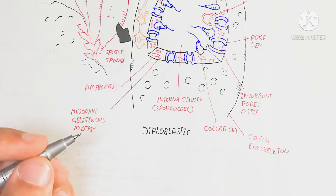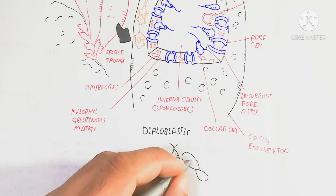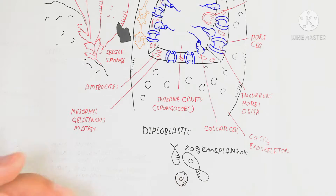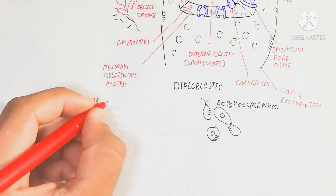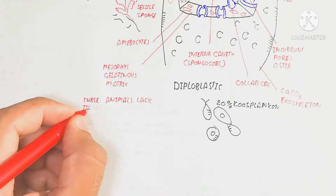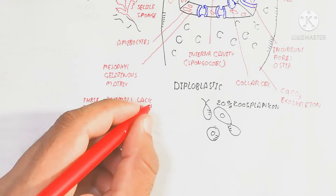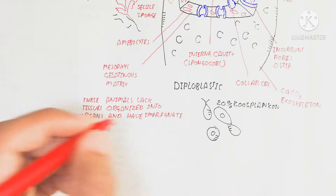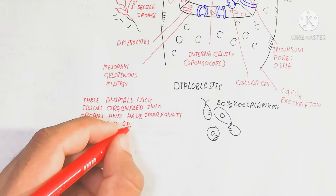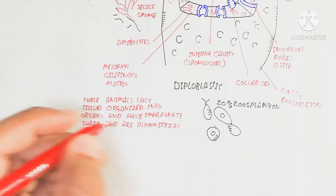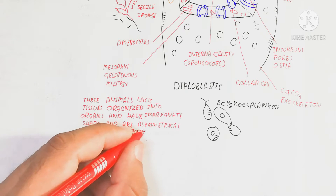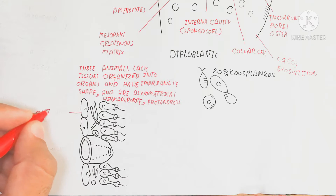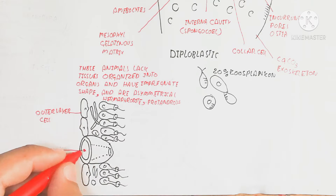The collar cells contain flagella which are used to create a water current to move food into the wall of the sponges. Sponges are diploblastic because they have two germinal layers: endoderm and ectoderm. About 20% of their diet is zooplankton. These animals lack tissues organized into organs. Their shape is asymmetrical and they are hermaphroditic, meaning both sexes are present in the same individual.